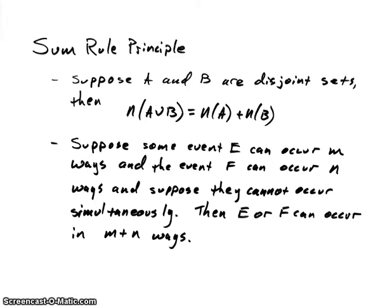What are we talking about in terms of experiments? I'll give the first part of the rule that we've seen before, and then I'll talk about it in terms of experiments. The sum rule: suppose A and B are disjoint sets, meaning they have no elements in common. Then the number of elements in A union B is equal to the number of elements in A plus the number of elements in B. This can only be true for disjoint sets.